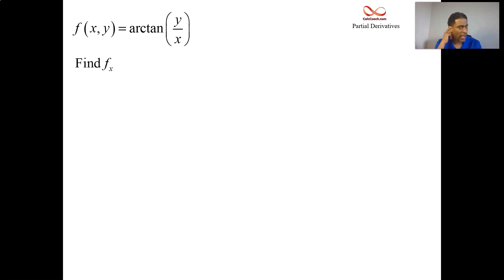It's like a chain rule, actually. The arctan of anything has as its derivative 1 over 1 plus that thing squared.